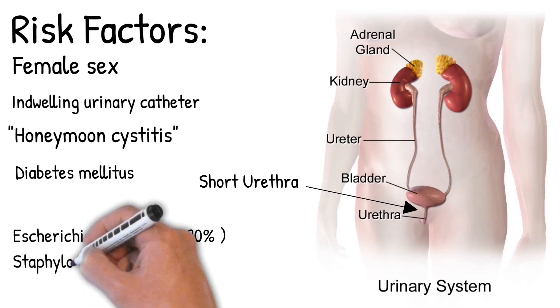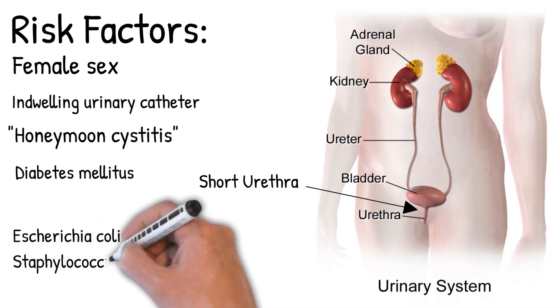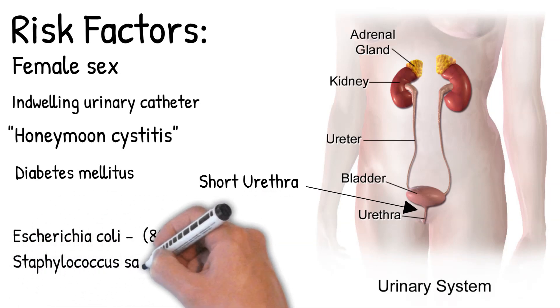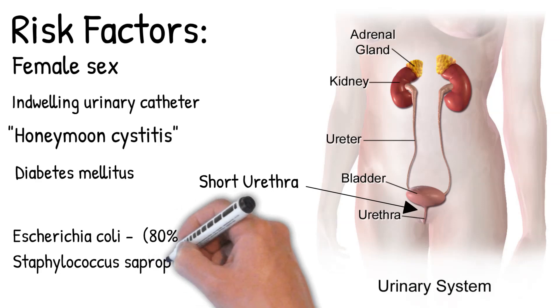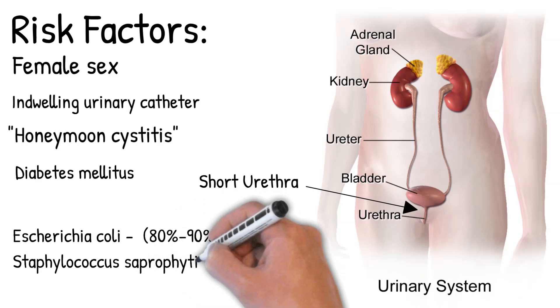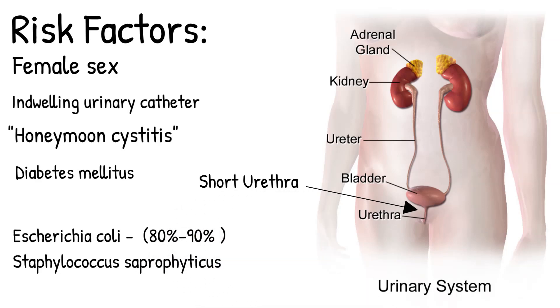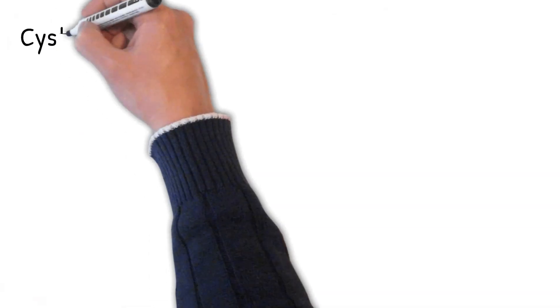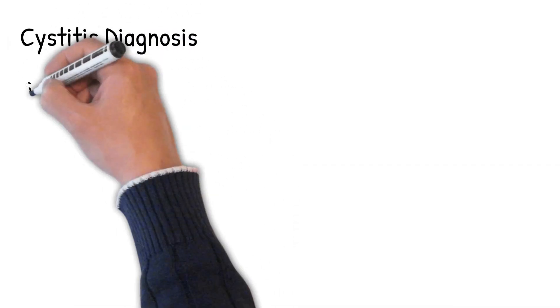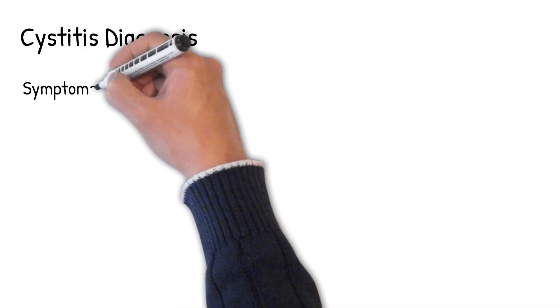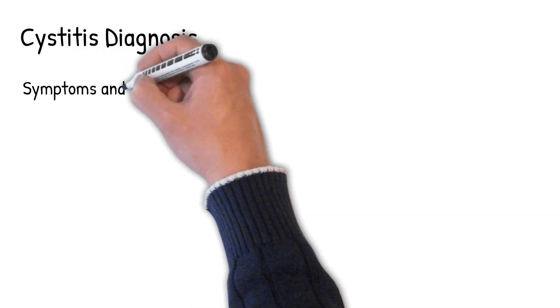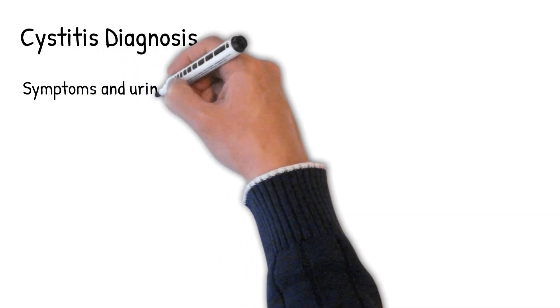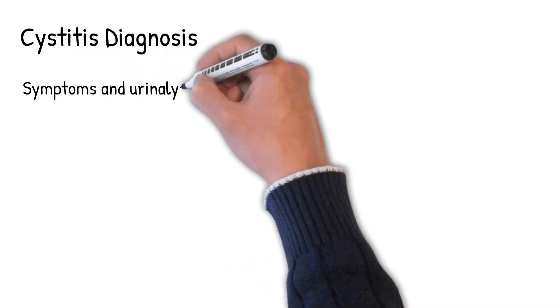Staphylococcus saprophyticus, particularly in sexually active women, accounts for approximately 10% to 20% of all cystitis cases. Diagnosis is based on symptoms, and in complicated or questionable cases via urinalysis.